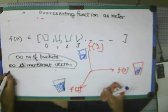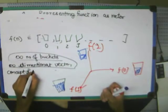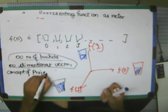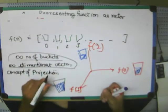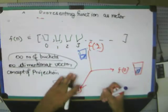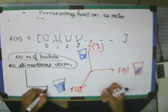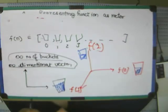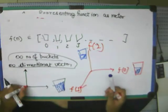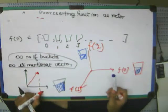Now there is a concept of projection. That if there is some vector, how much is the content of the vector in this bucket?